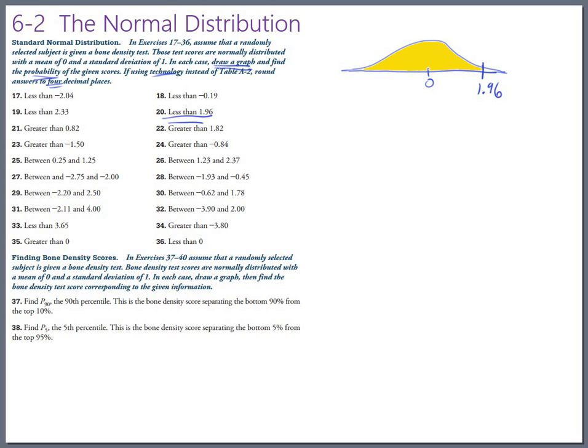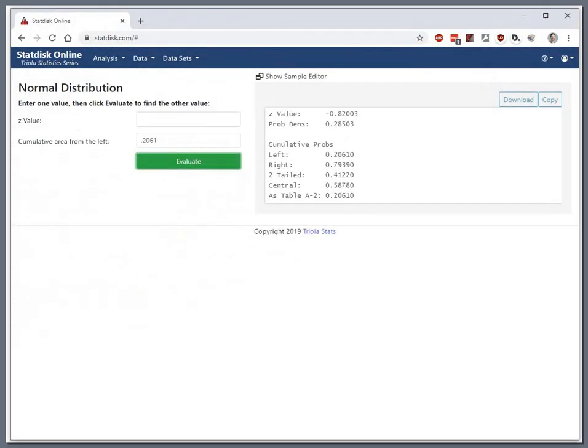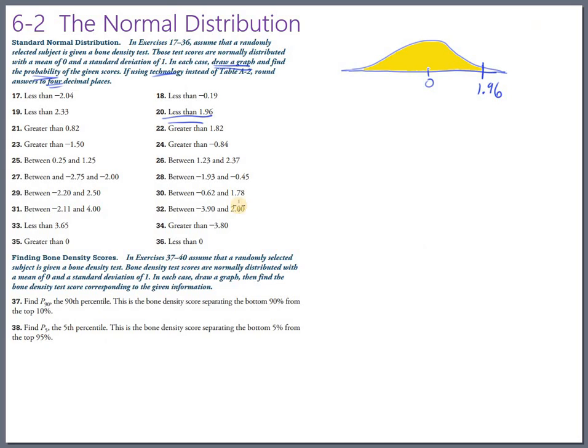But let's figure it out with StatDisk. That is the z-score, 1.96. And we want area to the left. So going back to StatDisk. Let's get rid of that. And the z-value is 1.96. And we want to evaluate that. And we want to talk about the cumulative probability to the left. And that happens to be 0.975. 0, if you want to round to four places. So this one would be 0.9750.